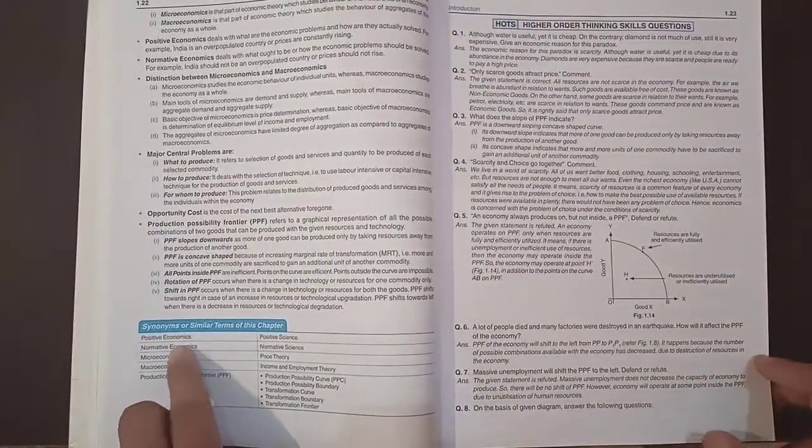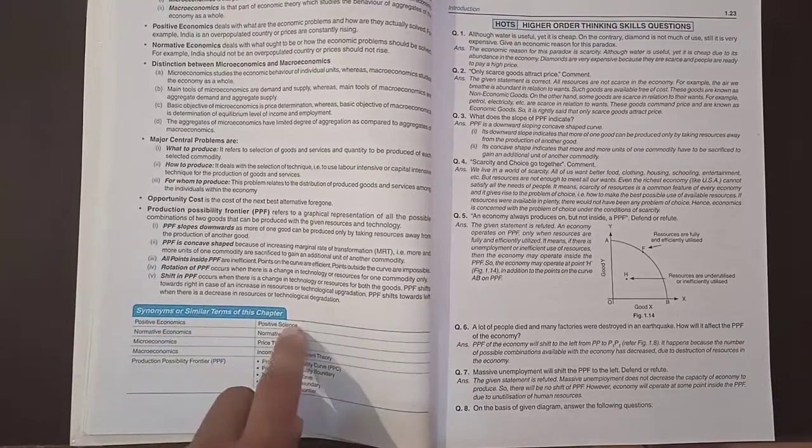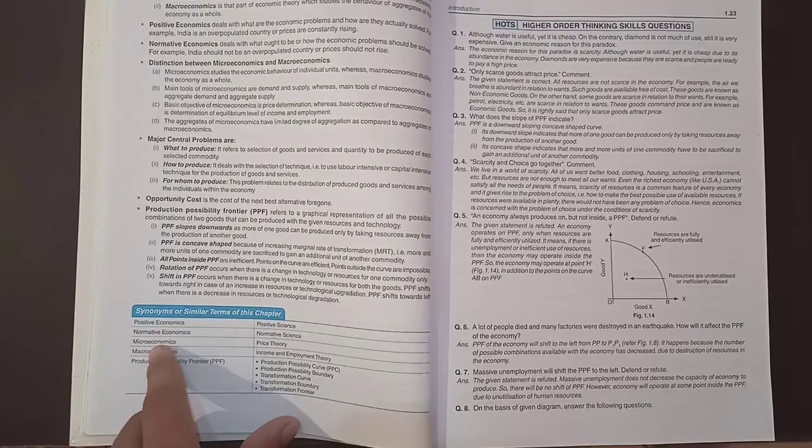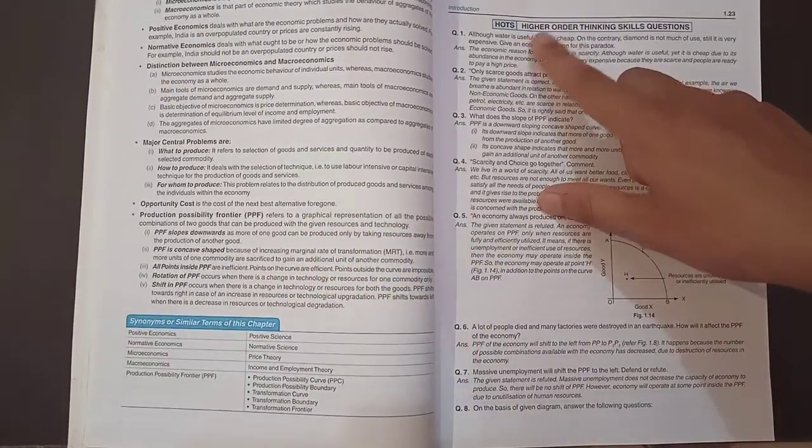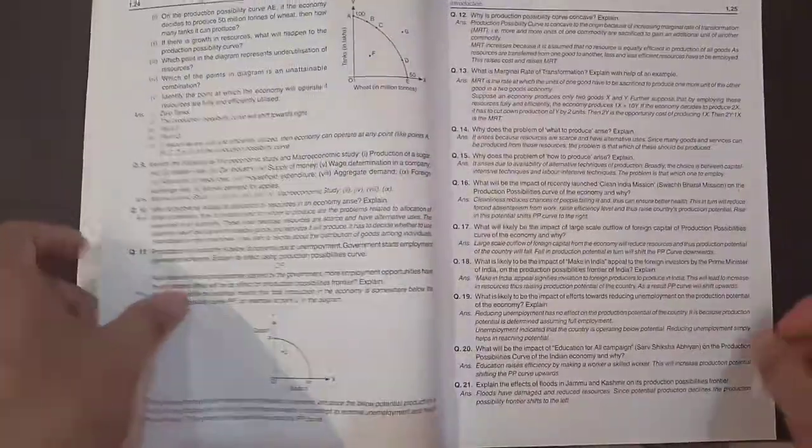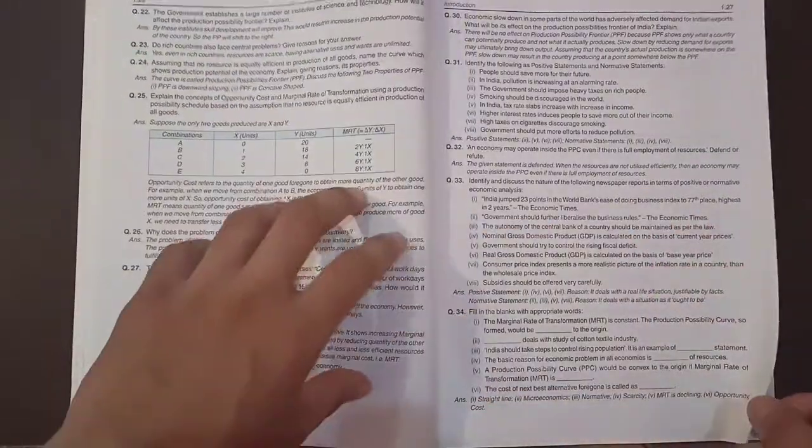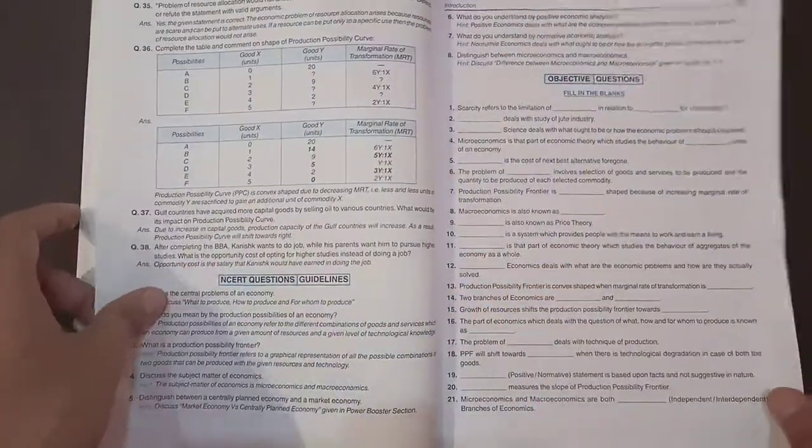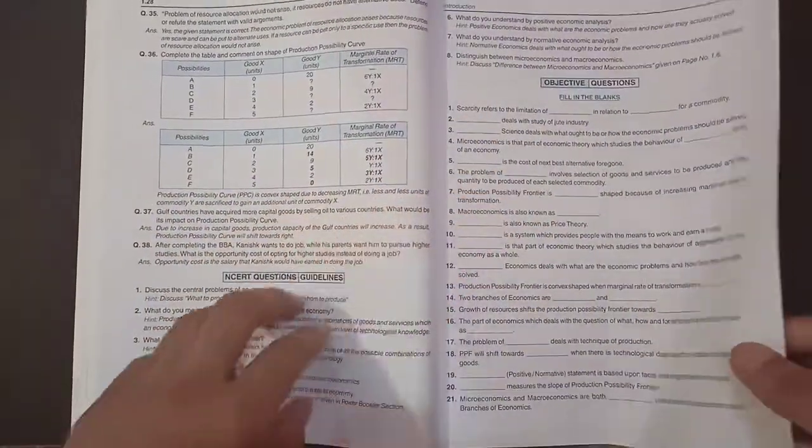Then synonyms of similar terms. Politics, economics means positive science, as you can see. Microeconomics means price theory. Then we have HOTS - Higher Order Thinking Skills questions. But for Term 1, you don't have to read these types of questions. You have to more focus on objective type questions, but you can also do these questions for your knowledge so that you can easily tackle your MCQs.